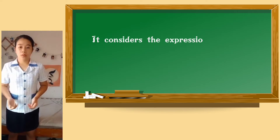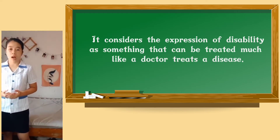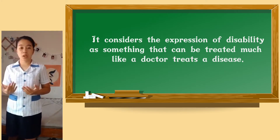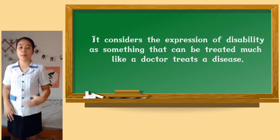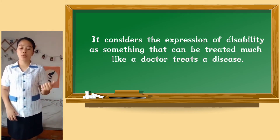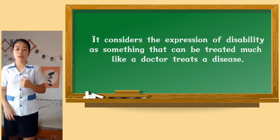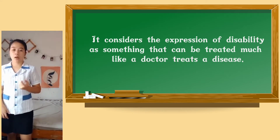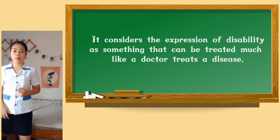The functional model considers the expression of disability as something that can be treated much like a doctor treats a disease. It stresses the adoption of a treatment regimen, strategy, or services that improves functional capacity rather than addressing the underlying condition or impairment.